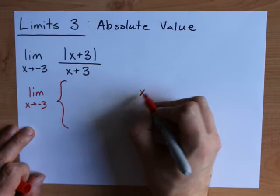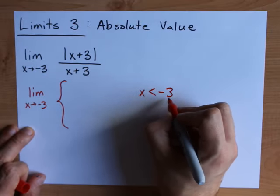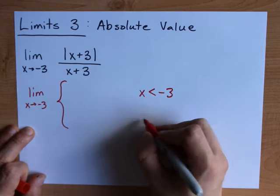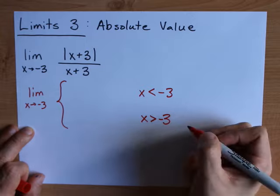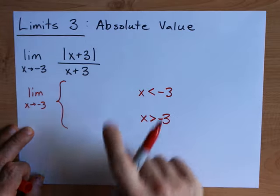So when x is less than negative three, I'm going to get a different result than when x was already greater than three. Oh, greater than negative three. And again, here's what I mean.